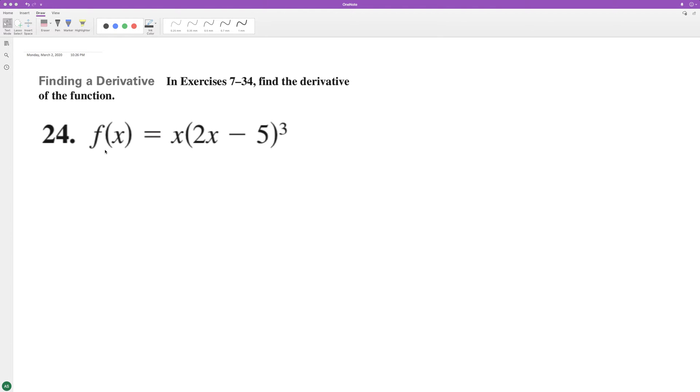Derivative of the following using the product rule. So f prime of x is going to be equal to one times two x minus five cubed. That's the derivative of x, just one.